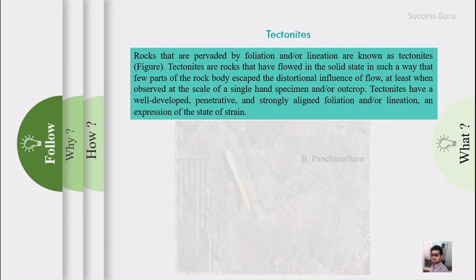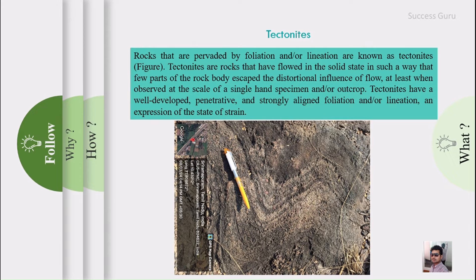Such a type of rock is simply called a tectonite. This is an image of a tectonite found in the Vellore region of Tamil Nadu. Tectonites are rocks that have flowed in the solid state, in such a way that few parts of the rock body escape the distortional influence of the flow, at least when observed at the scale of a single hand specimen or outcrop.